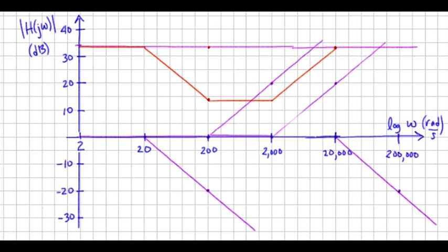So after that, this term and this term continue in opposite directions, effectively canceling each other, and so we end up at 34 dB. So again, the red trace is the final result, at least for the Bode magnitude plot.